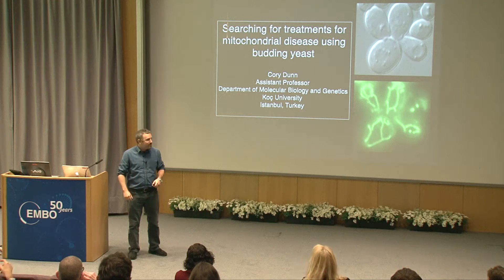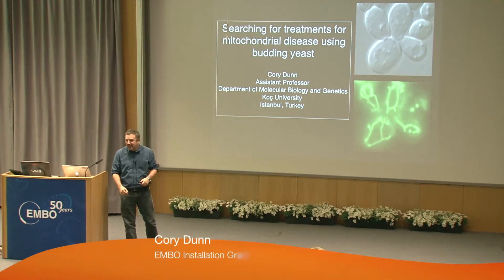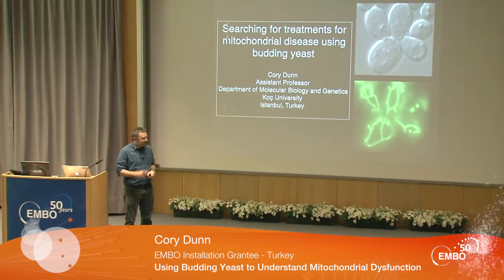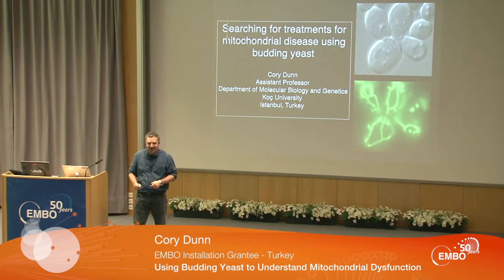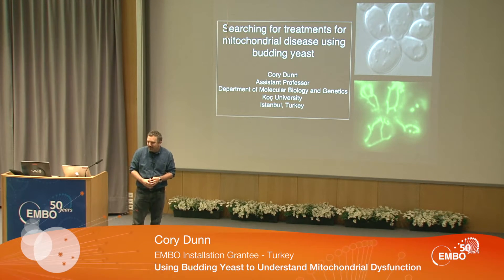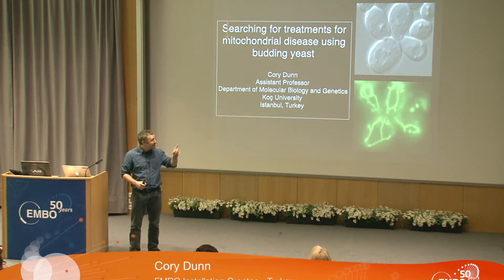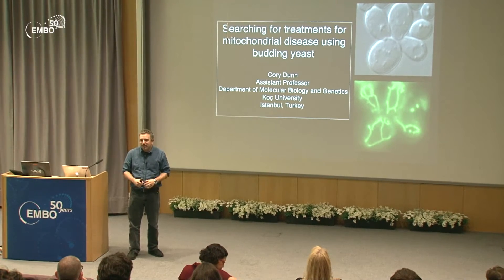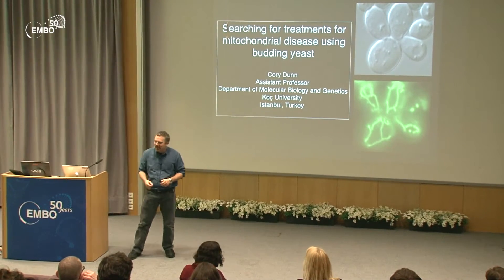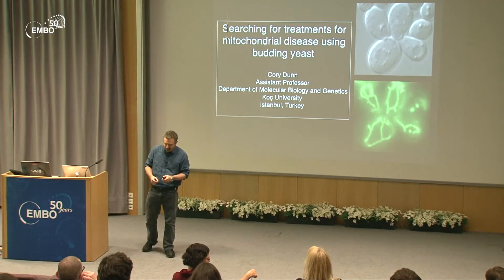Today I'm going to talk about how we're using a simple model organism to understand mitochondrial disease. Those green structures are the mitochondria we are studying, lit up with a green fluorescent protein, and above that you see the yeast we use, which is used for baking bread and brewing beer.